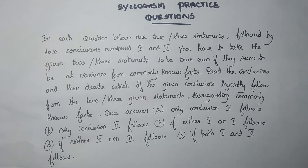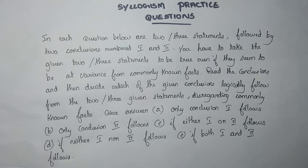To summarize the options: if conclusion 1 is correct, mark option A. If conclusion 2 is correct, mark option B. If either 1 or 2 follows, mark C. If both 1 and 2 follow, mark D. And both 1 and 2 is E. We will determine which conclusion is correct or wrong.